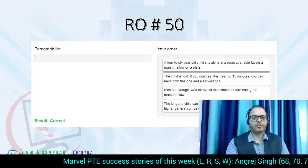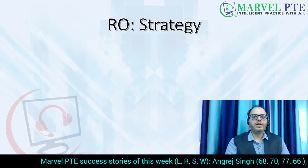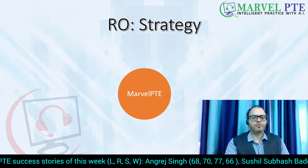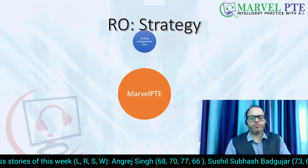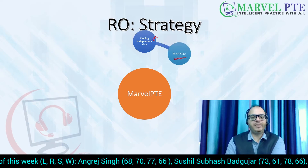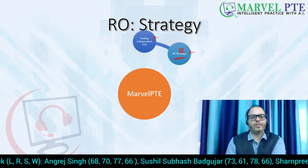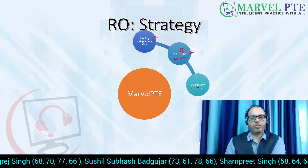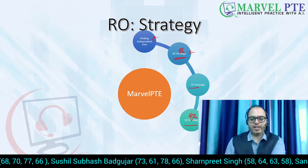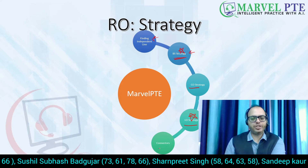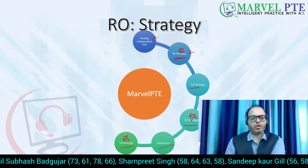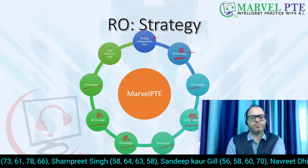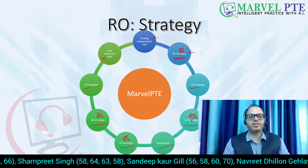So the correct order is confirmed — yes, the order is correct. If you use our strategies, you will be able to make reorder paragraph pairs quite easily. Our strategies include: finding the independent line first, then the BS (Broad-to-Specific) strategy, CO (Chronological Order) strategy, LO (Logical Order) strategy used in today's question, connectors, TO (Topical Order) strategy, AB (Abbreviation-based) strategy, SO (Subject-Object) strategy, and the Last Sentence Rule.